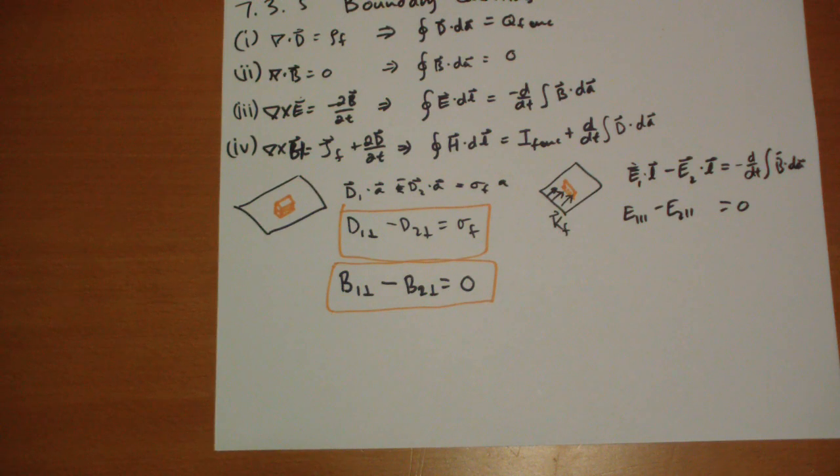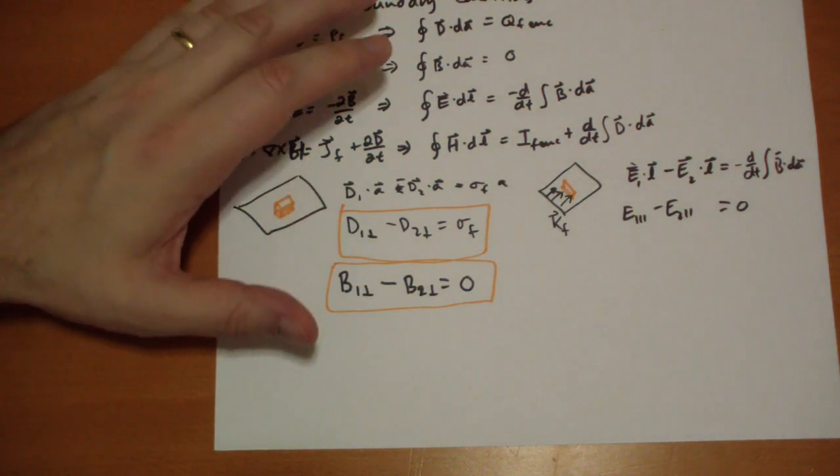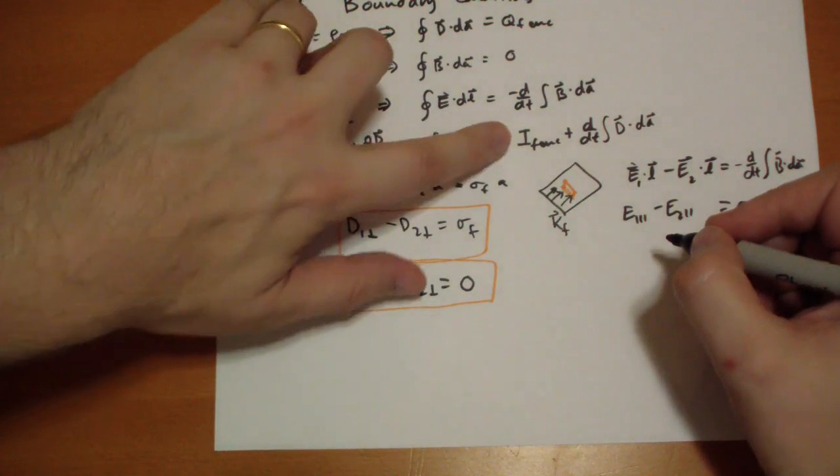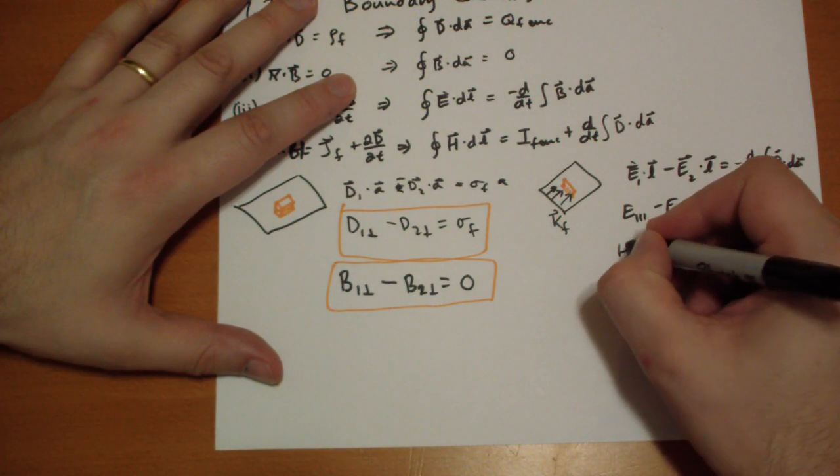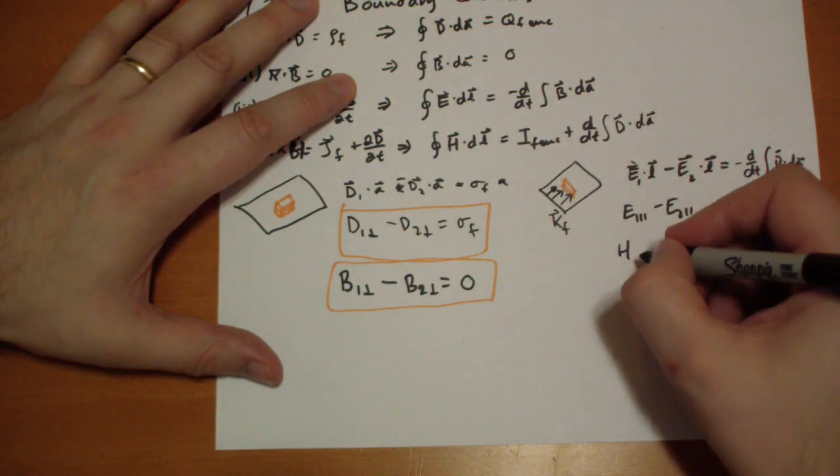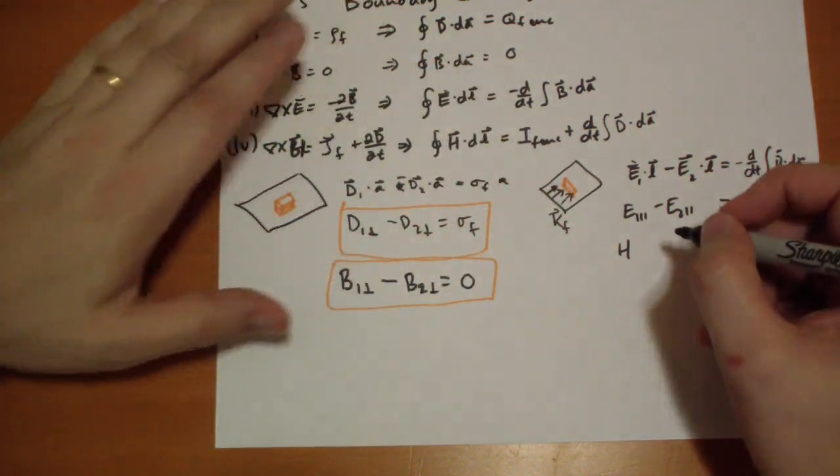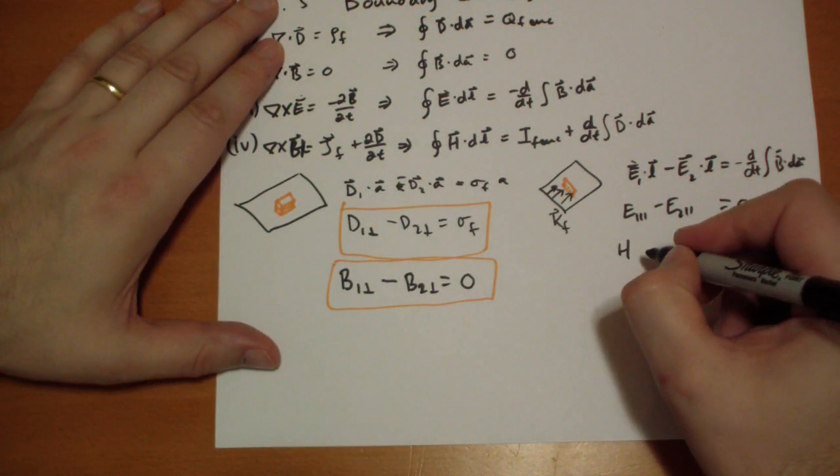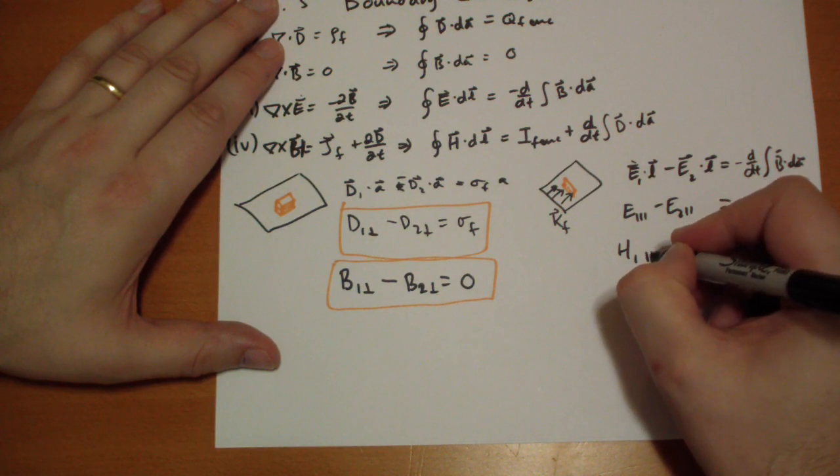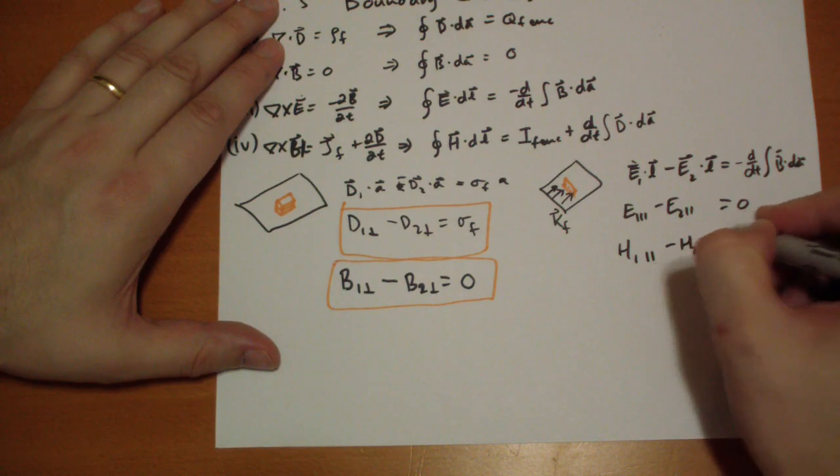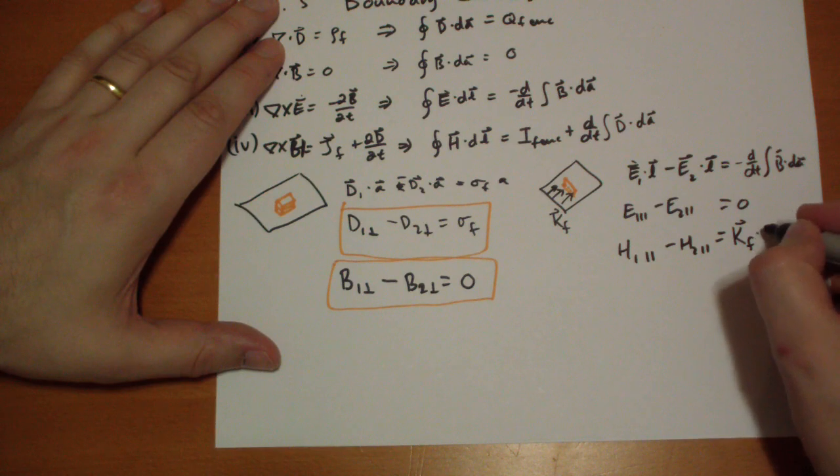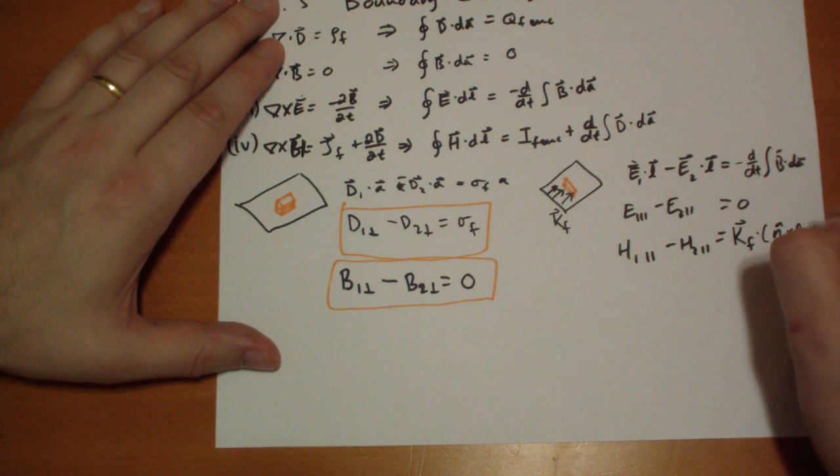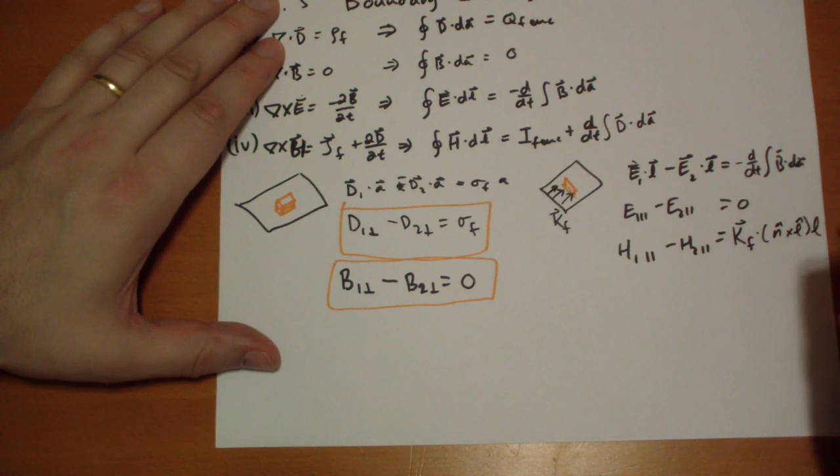For the H vector, using the same line of reasoning, except for this case we have the current enclosed plus the change in D flux. We get H1 parallel minus H2 parallel equals the free surface current Kf dotted with the normal hat cross the length vector L.